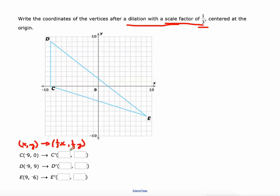So we'll just take a third of negative 9, which is negative 3, a third of 0, which is 0, a third of negative 9, which is negative 3, a third of 9, which is 3, a third of 9, which is 3, and a third of negative 6, which is negative 2.